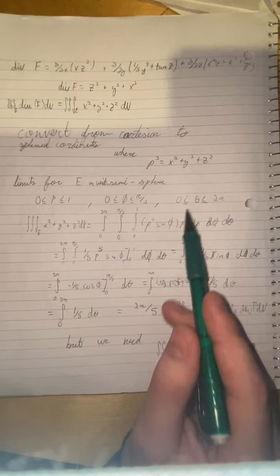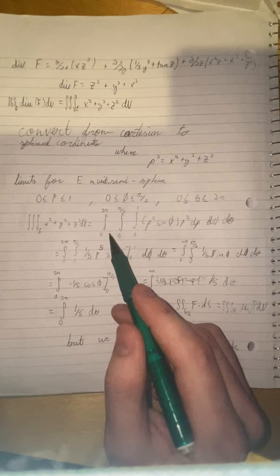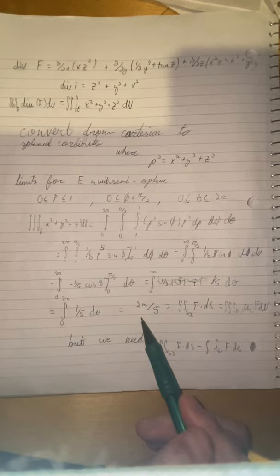So you plug that in, this is what your integral is going to look like. So then you have rho squared sine phi, rho squared, d rho, d phi, d theta, from zero to one, zero to pi over two, zero to two pi. When you take that integral, it's going to come out as two pi over five.